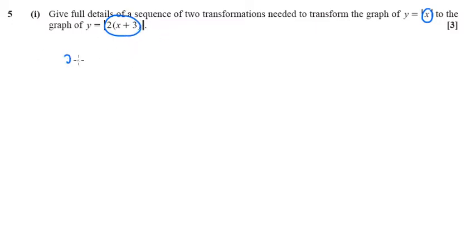So the first thing that's happened is that x has turned into x plus 3. And that is from a translation in the x direction. And because this is a plus 3, it's negative 3 units.